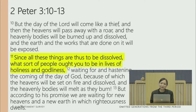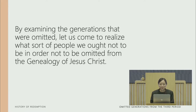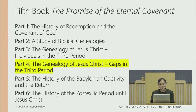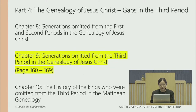In 2 Peter chapter 3, verses 10 to 13, verse 11 says: 'Since all these things are destined to be dissolved, what sort of people ought you to be in lives of holiness and godliness?' By examining the generations that were omitted in this genealogy, let us come to realize what sort of people we ought not to be — and also ought to be — in order not to be omitted and to be included in the genealogy of Jesus Christ. Today we are going to look at part 4 in the fifth book, chapter 9: the generations omitted from the third period, from page 160 to 169.